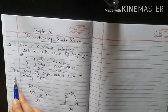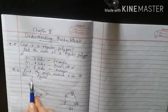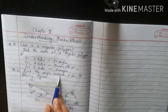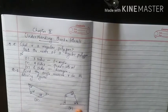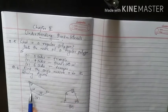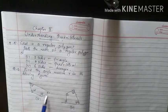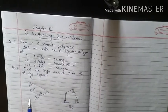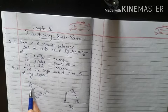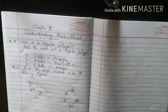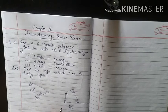Next question, question number 6: find the angle measure x in the following figures. First figure: this angle is 130 degrees, this angle is 50 degrees, here is 120 degrees, and x is to be found out.